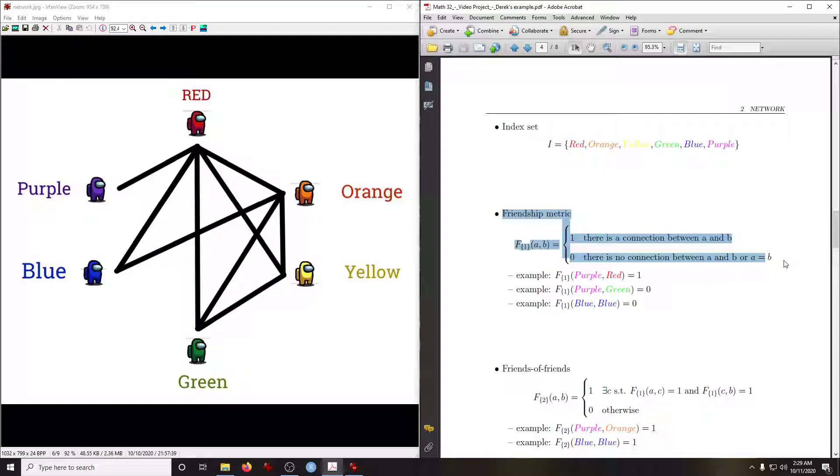Our friendship metric, coming from network theory, has a value of one if there's a connection between persons A and B, zero otherwise. Using the picture on the left to guide us, we would say that there is a connection between purple and red, so the function has a value of one. We see that there is no friendship connection between purple and green, so the function value is zero.